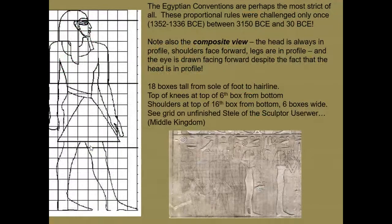We should also be aware that the Egyptian conventions of representation — the way the culture chose to depict objective reality — were essentially unchanged for close to 3,000 years. The proportional rules are mapped out in a grid, which we can see from an unfinished carving where sections have begun and sections remain incomplete. That's exactly where we got these precise geometric rules of the proportions of the body.